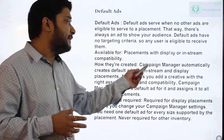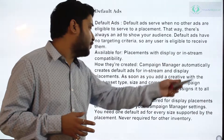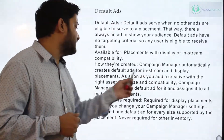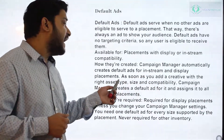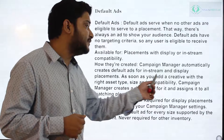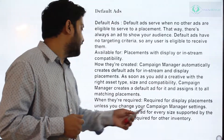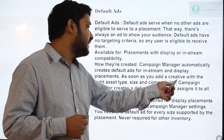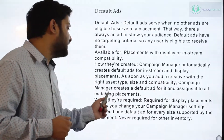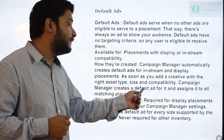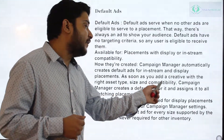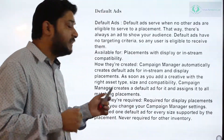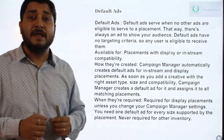Campaign Manager automatically creates a default ad for its in-stream and display placements as soon as you add a creative with the right asset type, size, and compatibility. Campaign Manager creates a default ad for it and assigns it to all the placements that are set up.